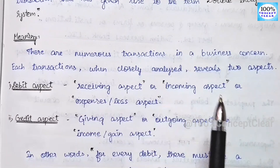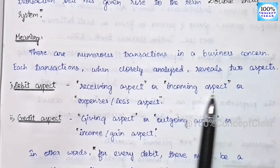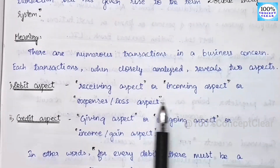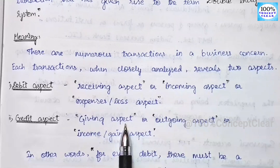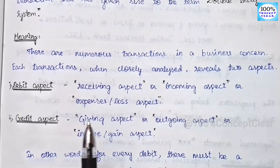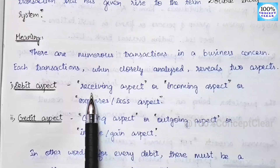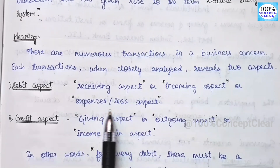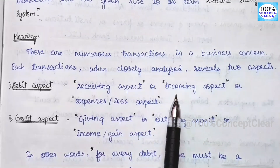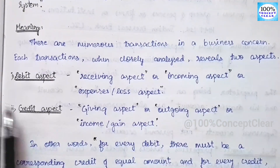There are two aspects: debit and credit. So we have debit and credit. This is the double entry system.